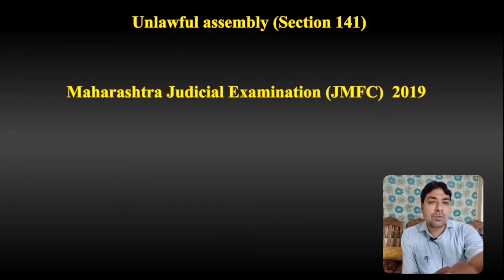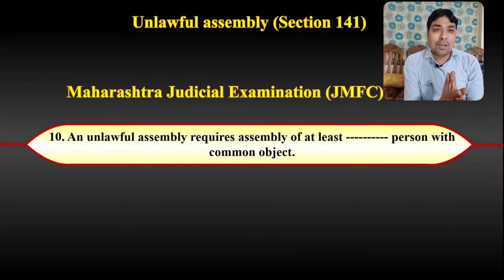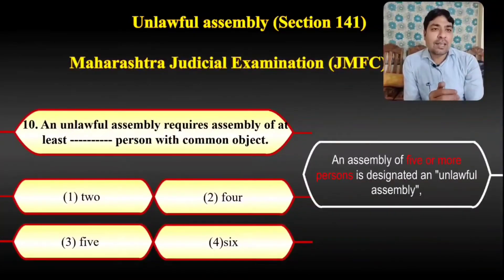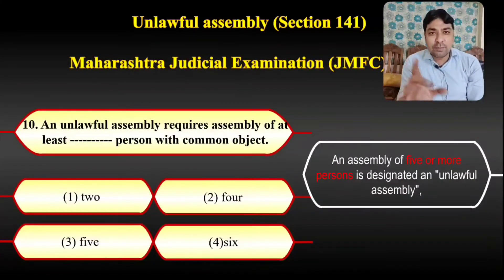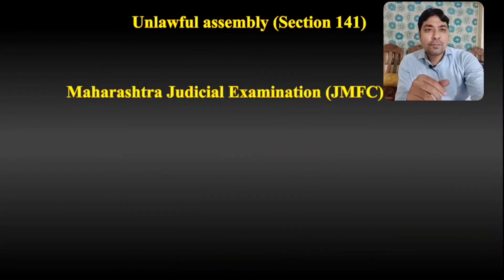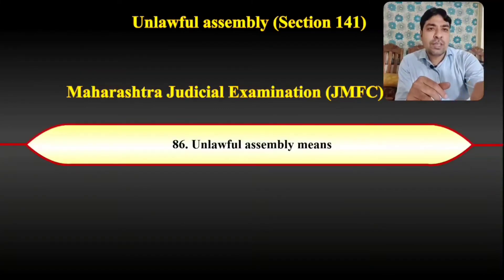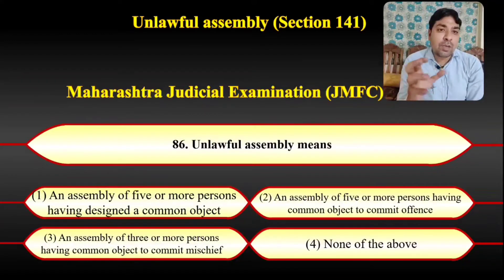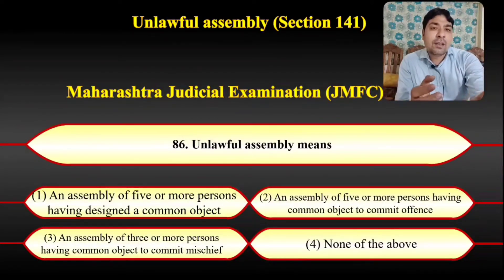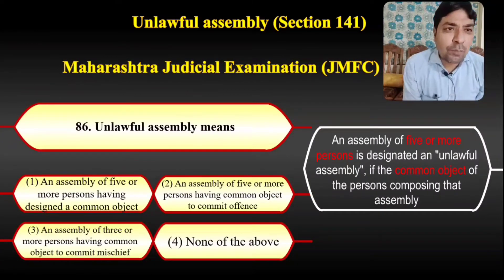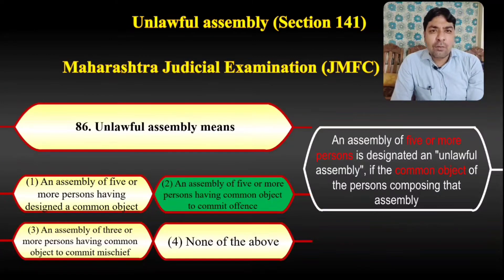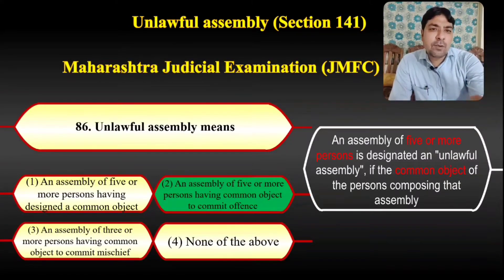A question asked in Maharashtra Judicial Examination 2019 on Section 141: 'An unlawful assembly requires assembly of at least __ persons with common object' — options were 2, 4, 5, or 6. The correct answer is 5. In the 2012 Maharashtra Judicial Examination, the question asked for the definition of unlawful assembly; the correct option was: 'An assembly of five or more persons having a common object to commit an offense.'